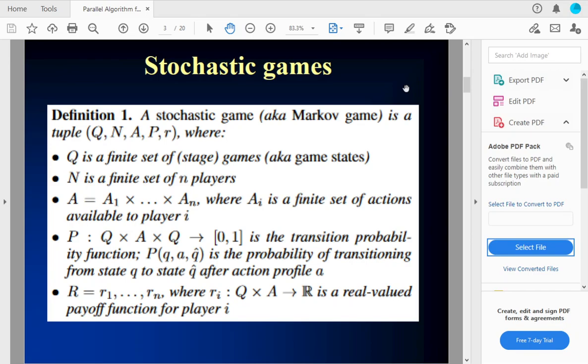And so a natural game model for these scenarios is a stochastic game, also called Markov game. Stochastic game has the following components. It has a set of stages, stage games or game states. It has a finite set of players. Each player has a finite set of actions available. When at each state for each action, the combination of the players, there's going to be a probability of transitioning into each other state. Some of them might be zero. And then each player is going to get a reward, a real valued payoff for each combination of state and actions.